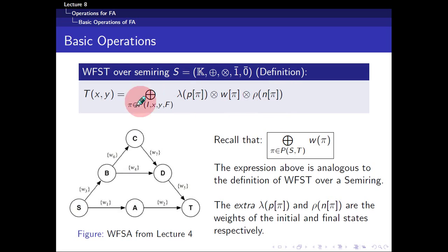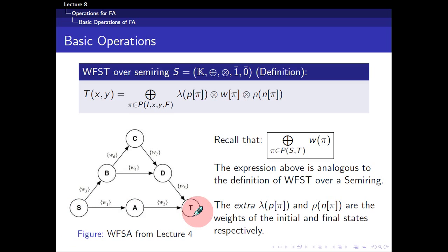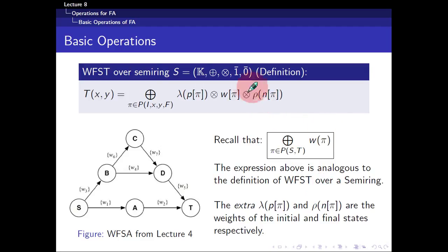If you find this a bit confusing, just recall the simpler version from the previous few lectures. If you're given a particular finite automaton starting from S ending at T, you identify the three paths and then you add them together. The only difference here is the extra input and output, as well as the initial weight function and the final weight function.